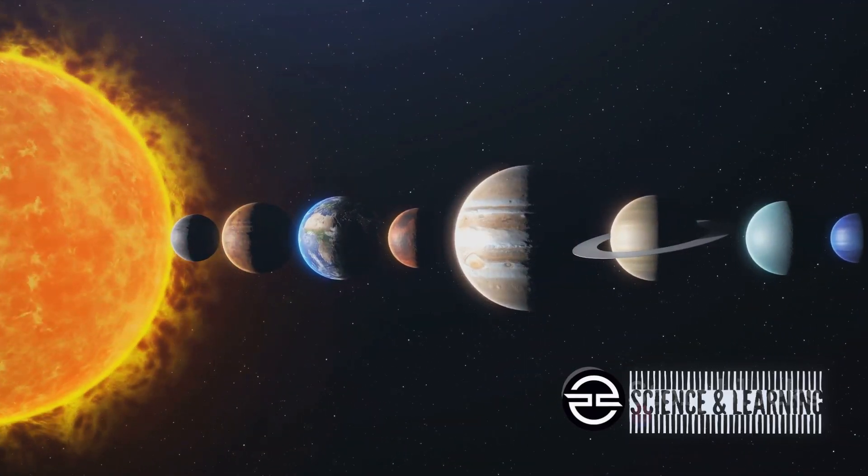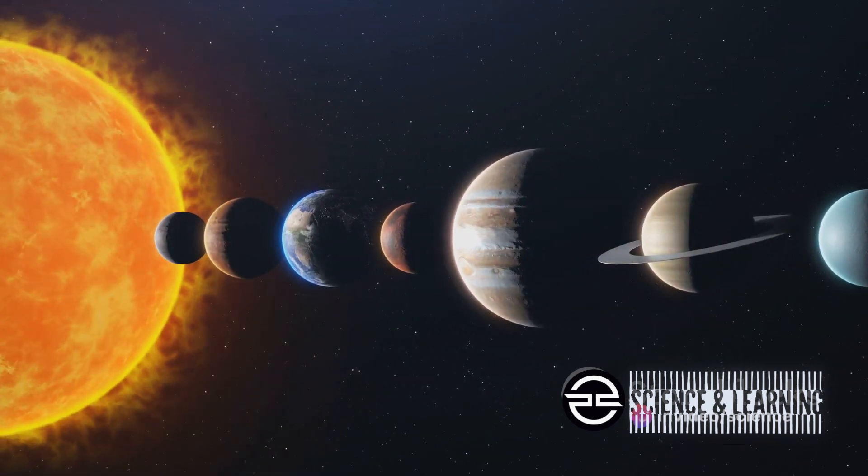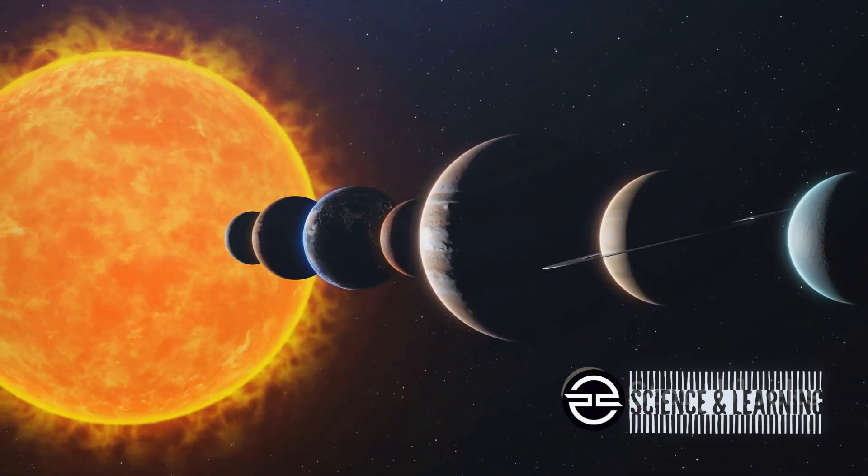You see, Mars and Earth aren't just neighbors in our solar system. They're bound by intricate astronomical cycles that choreograph their movements and, surprisingly, influence our planet in profound ways.